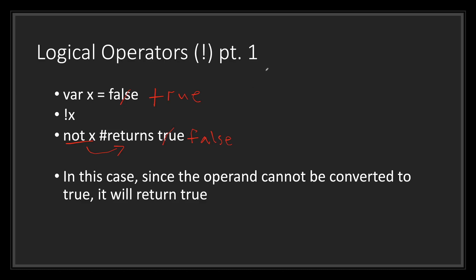An easy way to think about it is: if whatever your value can be converted to in a logical value — whether true or false — just return the opposite. An easy rule to remember is if you have 0, false, or null, your value in the NOT operator will always be true, and everything else will be false.